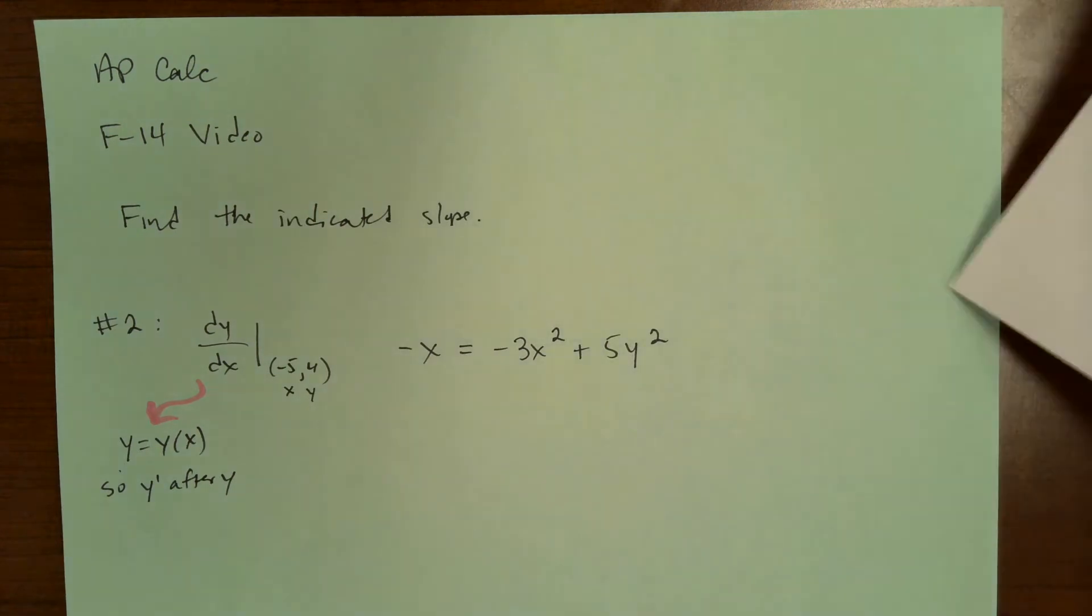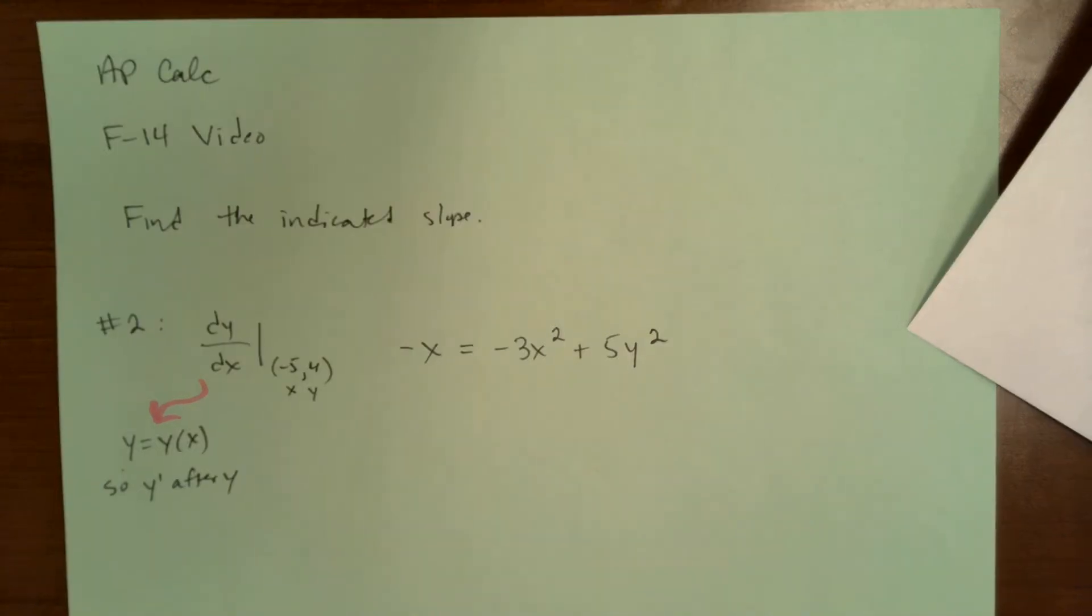The big thing about implicit differentiation is that it allows us to find the slope of the tangent line to a graph of something that's not a function. If you remember from the past, a function is like a relation that has for every input, there is exactly one output.